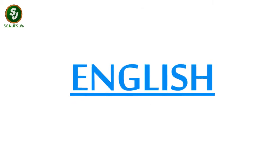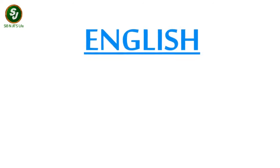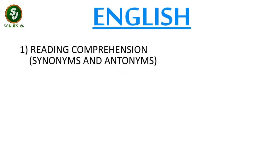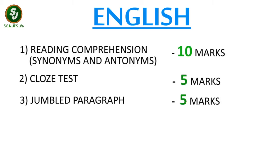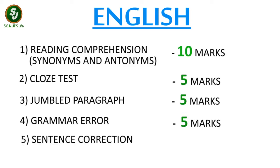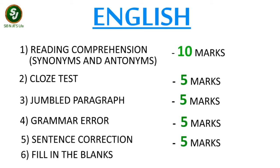Now finally we come to the English section. You will have questions from Reading Comprehension, which will consist of synonyms and antonyms, and this will be of 10 marks. Next you will have a Cloze Test of 5 marks, after that a Jumbled Paragraph of 5 marks, then questions from Grammar Error again for 5 marks, and Sentence Correction also for 5 marks. Lastly, Fill in the Blanks may or may not come, but you can expect a question of 5 marks, so to be on the safer side you can practice them.